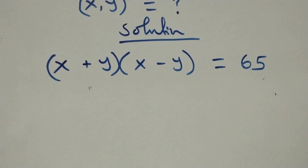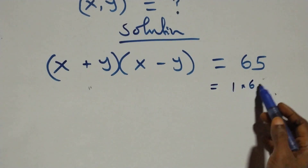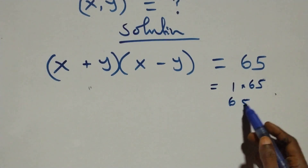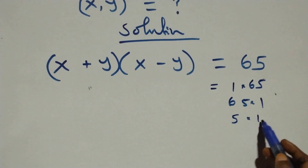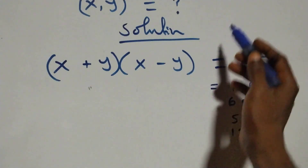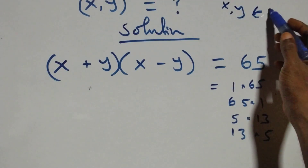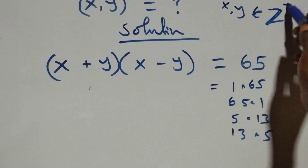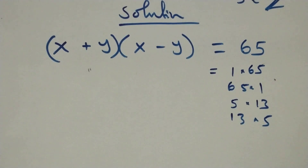65 can be written either as 1 times 65, 65 times 1, 5 times 13, or 13 times 5. We discover here that both x and y are members of positive integers — that is the integer solution we are looking for.